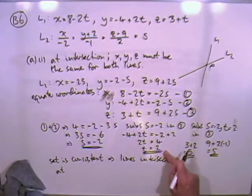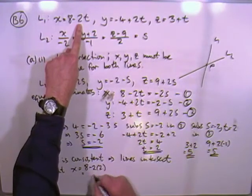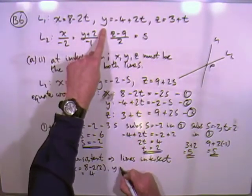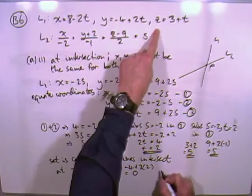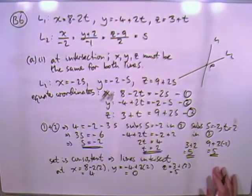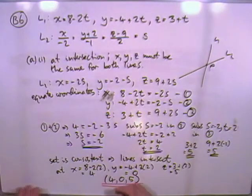And then using either of these parameters, use the t. It's a bit easier looking. So that'll be 8, take away 2 times t. The y will be negative 4 plus 2 times t. And the z will be 3 plus the t. And putting those numbers together, you have the point of intersection, 4, 0, 5. That's that done.